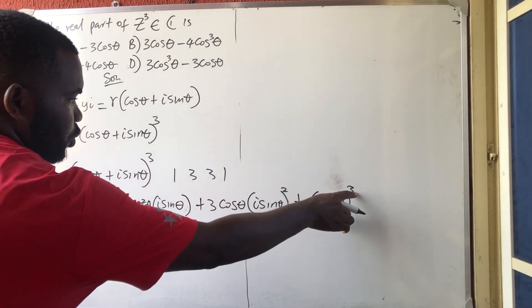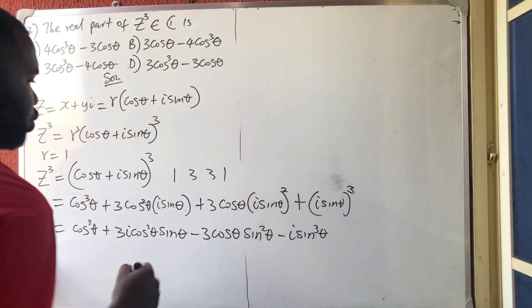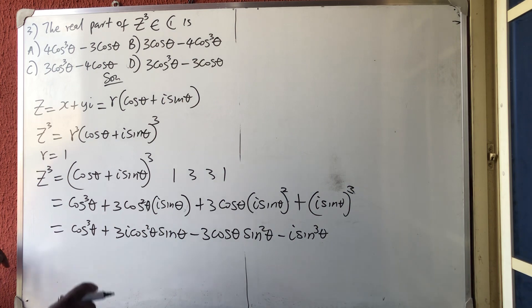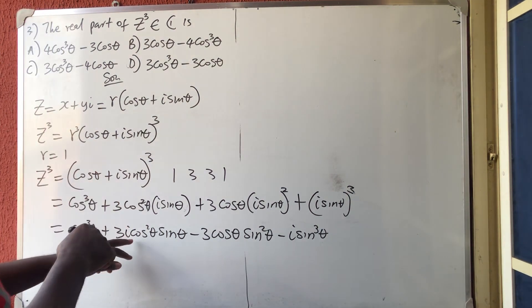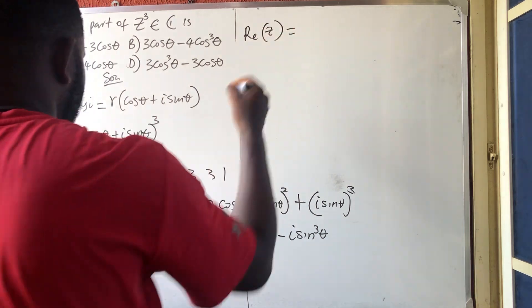So, I'm going to have minus 3 cos theta sin square theta. Then, i raised to the power 3 is minus i sine cube theta. So, they talked about only the real part. The real part is the one that does not have i. So, the real part of Z is equal to what?